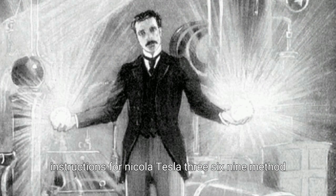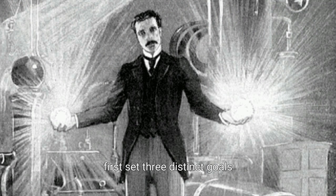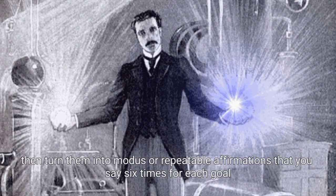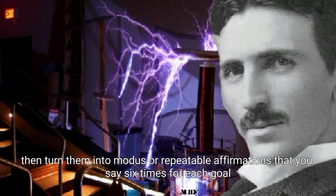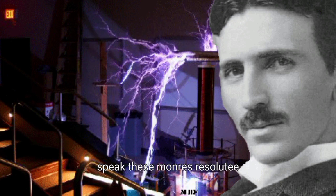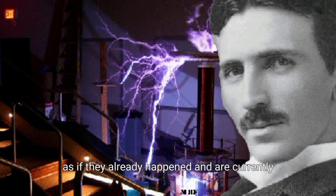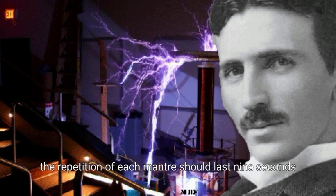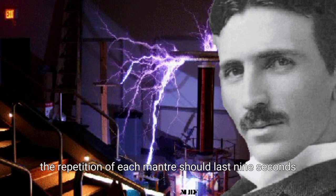Instructions for Nikola Tesla 3, 6, 9 method. First, set three distinct goals. Then, turn them into mantras or repeatable affirmations that you say six times for each goal. Speak these mantras resolutely, as if they already happened and are currently part of your reality. The repetition of each mantra should last nine seconds.